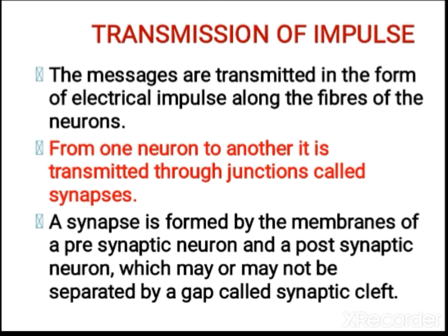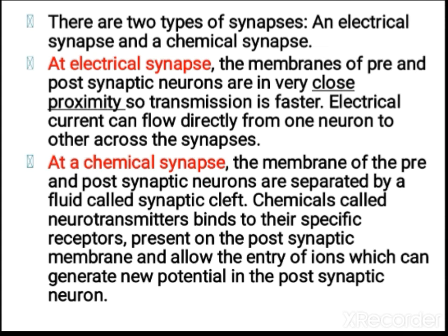Next is the transmission of impulse. Messages are transmitted in the form of electrical impulses across the fibers of a neuron. From one neuron to another, impulses are transmitted through junctions called synapses. The synapse is formed by the membrane of a pre-synaptic neuron and a post-synaptic neuron, separated by a synaptic cleft. There are two types of synapses: electrical synapse and chemical synapse. In electrical synapses, the pre- and post-synaptic neuron membranes are very close, so transmission is faster and occurs as an electric impulse.